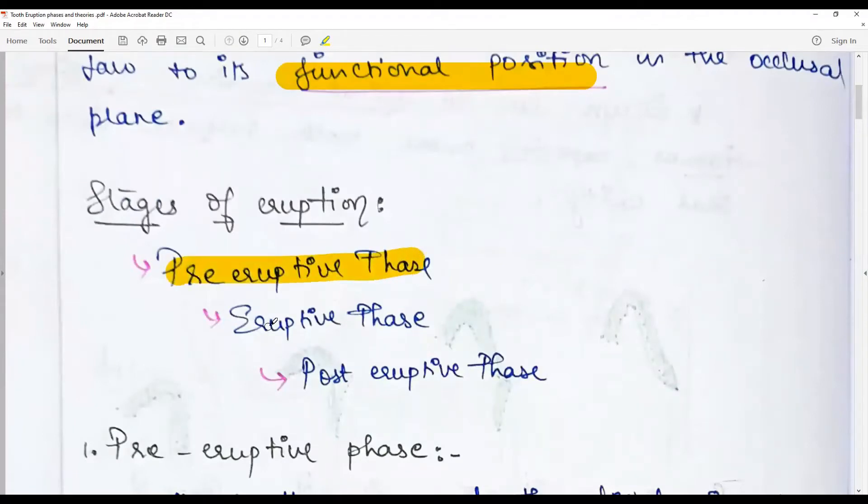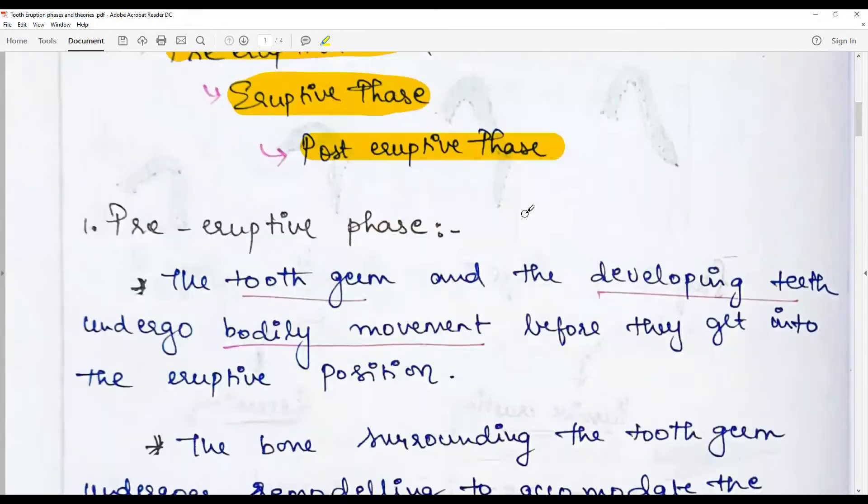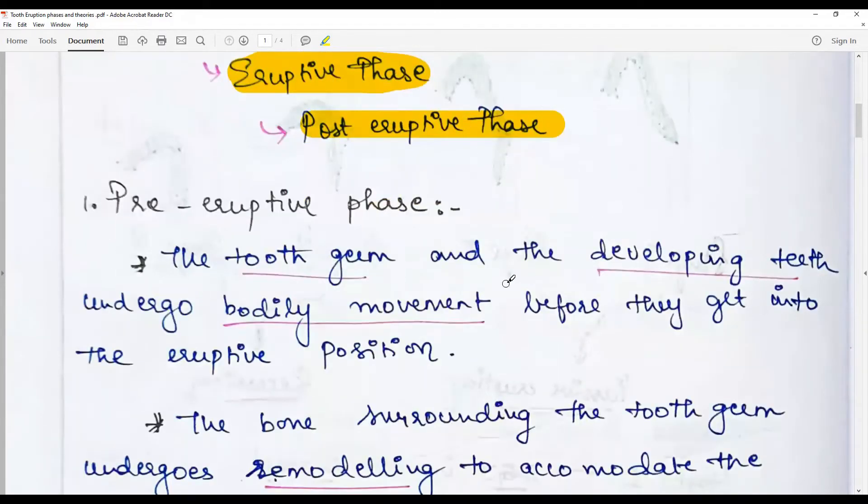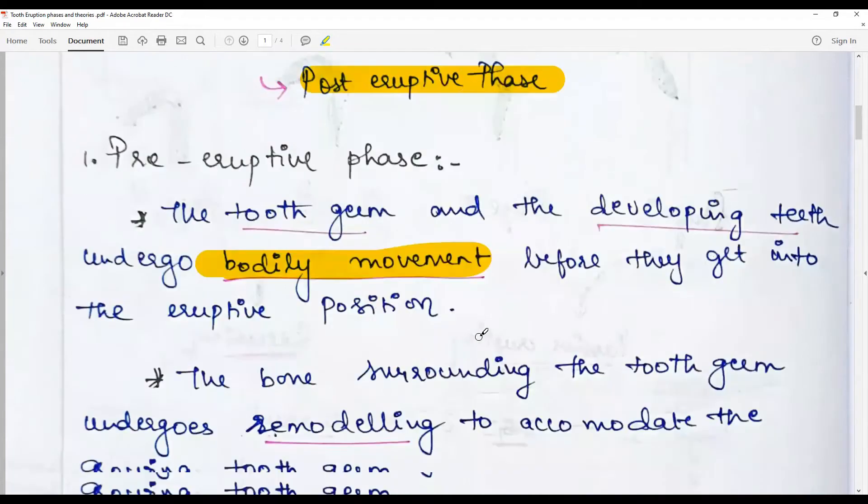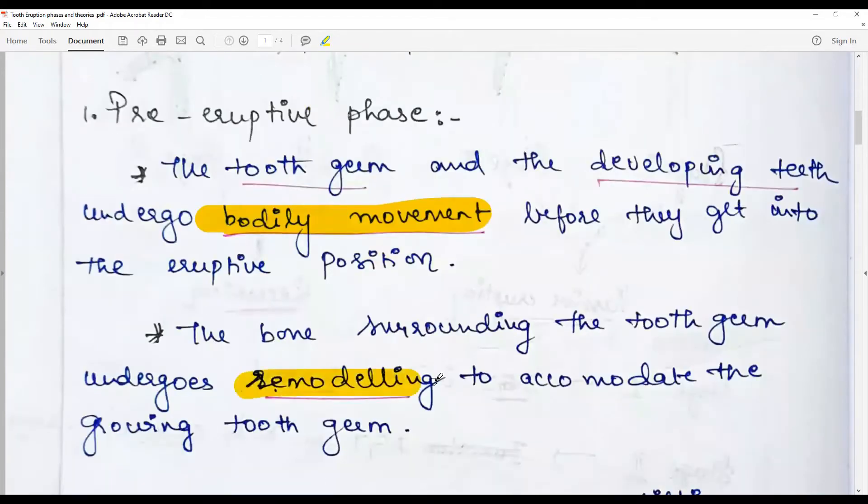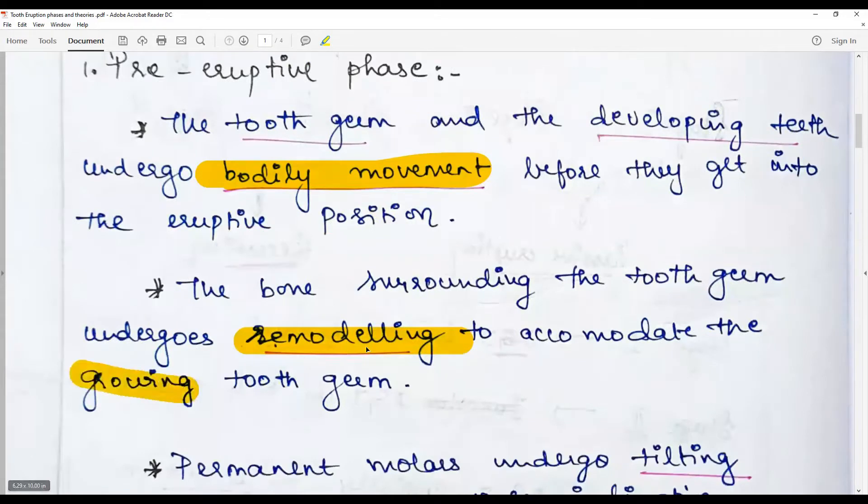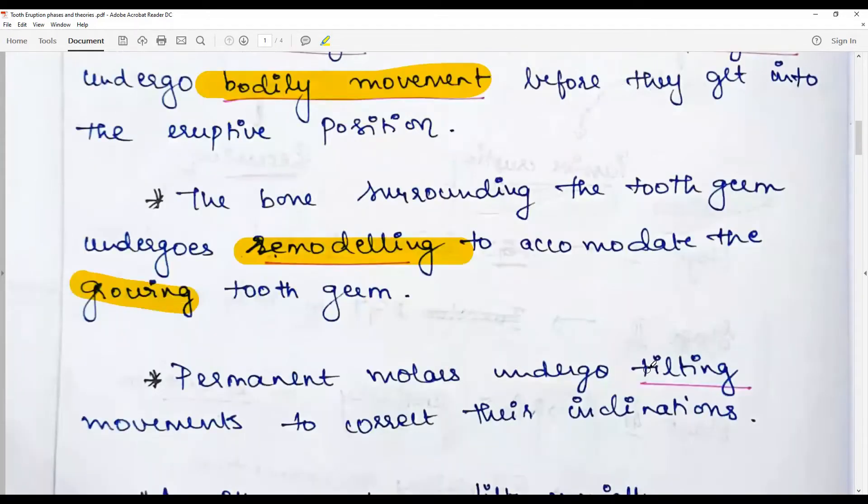The pre-eruptive phase: the tooth germ and the developing tooth apparatus undergo a bodily movement before they get to the eruptive position. This is mostly a bodily movement. The bone surrounding the tooth germ undergoes rapid remodeling to accommodate the growing tooth germ.